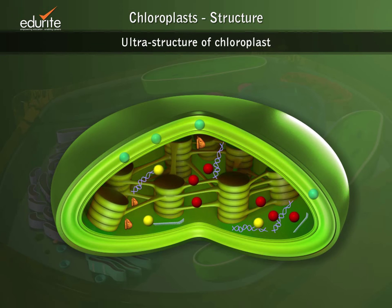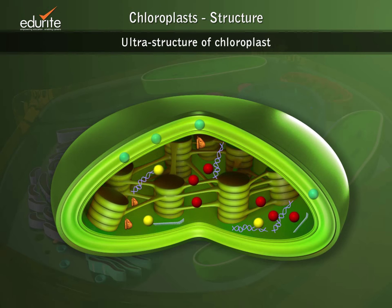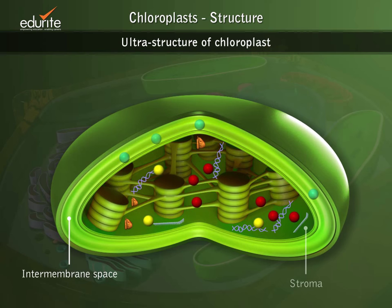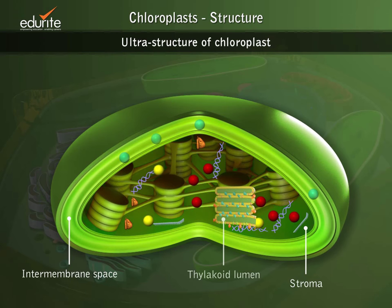Within the stroma is another membrane system called the thylakoids. The three membrane system divides chloroplasts into three distinct internal compartments: one, the inter-membrane space between the inner and outer membranes of the chloroplast envelope; two, the stroma which lies inside the envelope but outside the thylakoid membrane; and three, the thylakoid lumen.